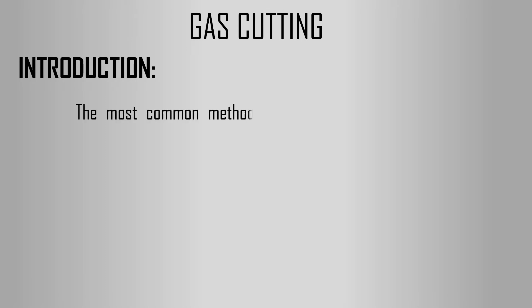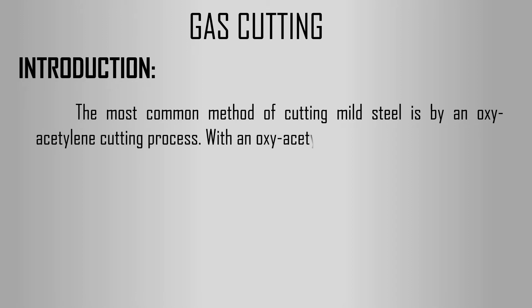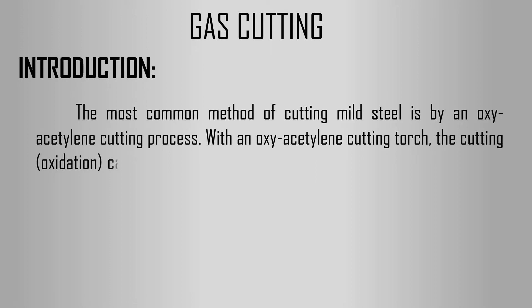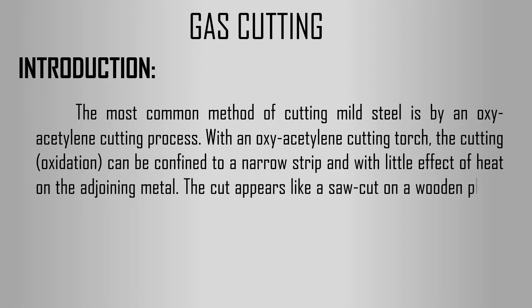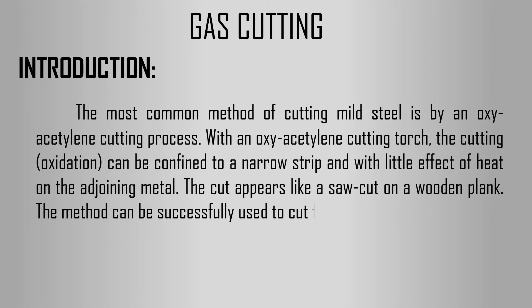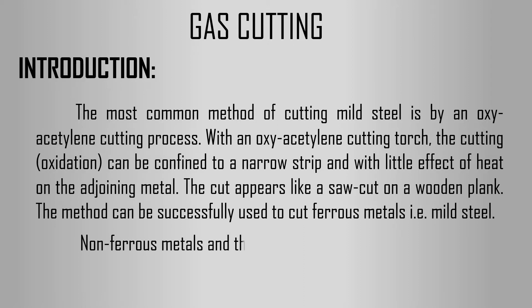First, we are going to see the introduction of gas cutting. The most common method of cutting mild steel is by an oxyacetylene cutting process. With an oxyacetylene cutting torch, the cutting oxidation can be confined to a narrow strip with little effect of heat on the adjoining metal. The cut appears like a saw cut on a wooden plank. The method can be successfully used to cut ferrous metals, that is, mild steel. Non-ferrous metals and their alloys cannot be cut by this process.